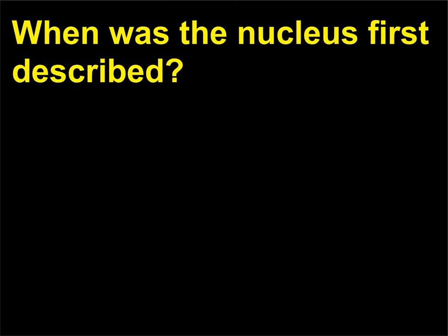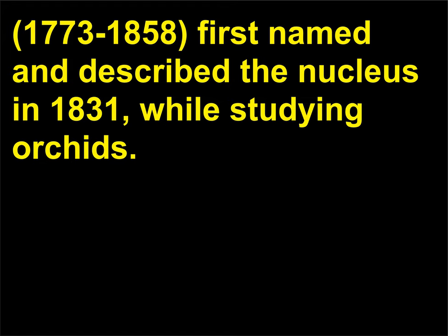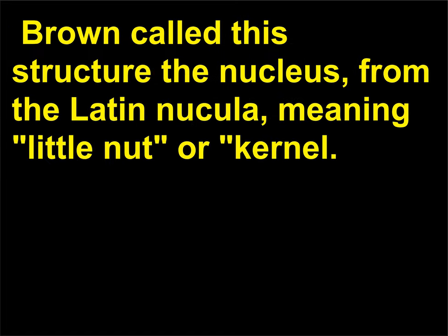When was the nucleus first described? The Scottish botanist Robert Brown, 1773 to 1858, first named and described the nucleus in 1831, while studying orchids. Brown called this structure the nucleus, from the Latin nucula, meaning little nut or kernel.